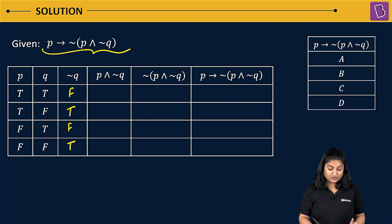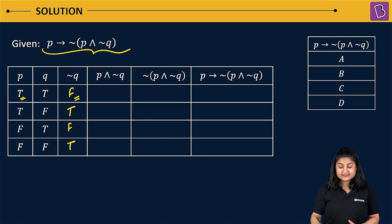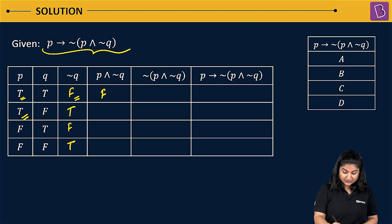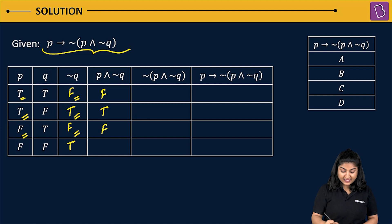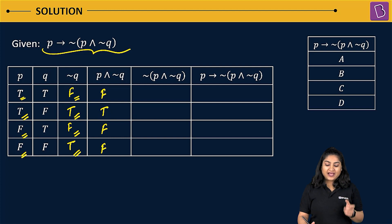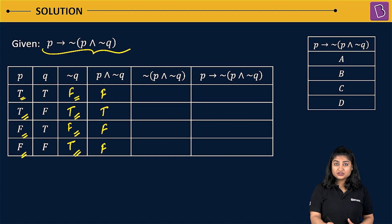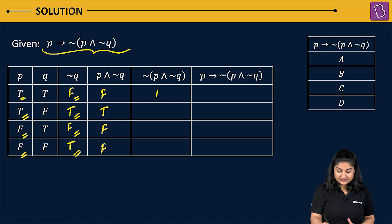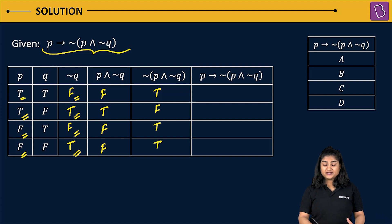Now we calculate P and negation Q. Where P is T and negation Q is F, the conjunction is false. Where P is T and negation Q is T, the conjunction is true. Where P is F and negation Q is F, it is false. And where P is F and negation Q is T, it is false. So P ∧ ¬Q gives F, T, F, F. The negation of these values gives T, F, T, T.